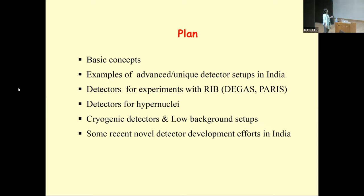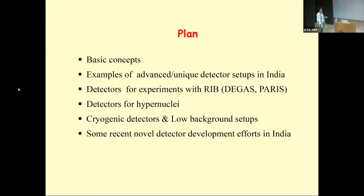I'll start with a few basic concepts for a brief recapitulation. Then I want to give a few examples of detector setups in India at different accelerator centers, including setups for experiments with radioactive ion beams, gamma ray detector arrays with hypernuclei, cryogenic detectors, low background setups, and new detector development efforts in India.